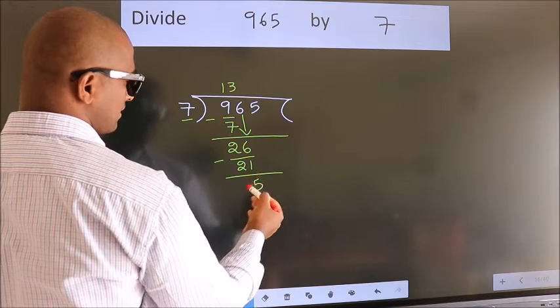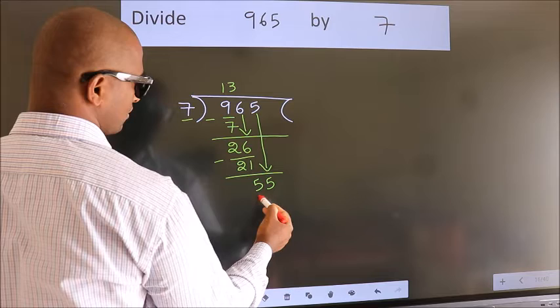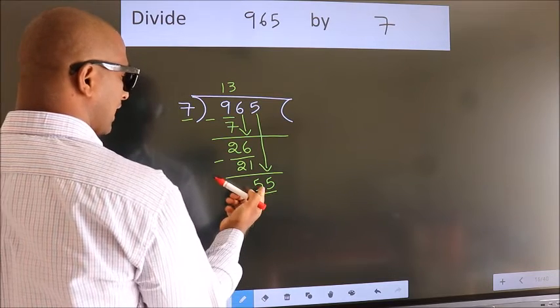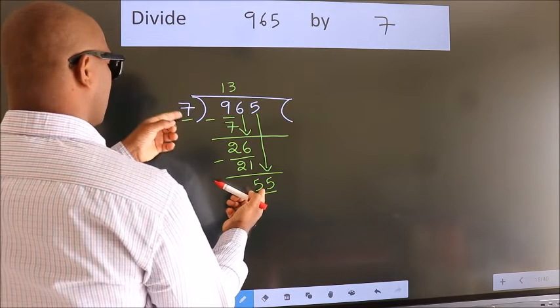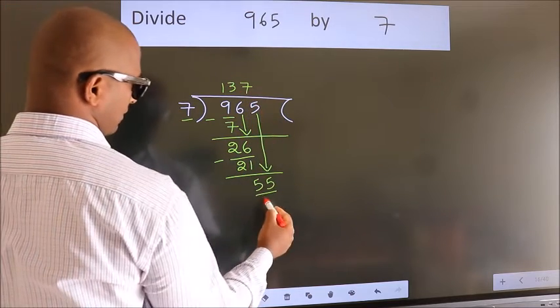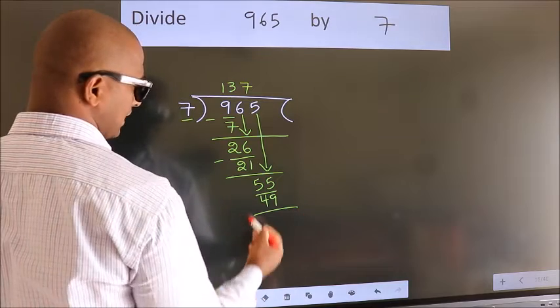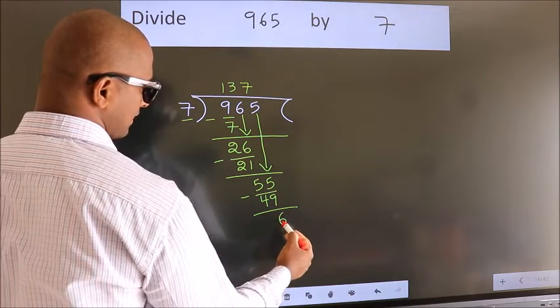After this, bring down the beside number. So 5 down. So 55. A number close to 55 in 7 table is 7 sevens, 49. Now we subtract. We get 6.